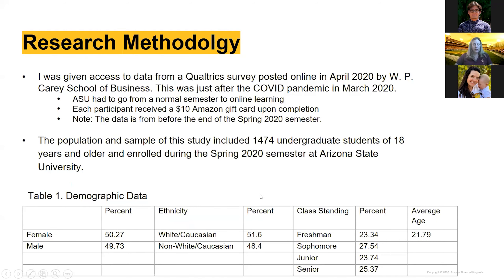For my research, I was given access to a survey taken in April 2020. It was posted online — a Qualtrics survey done by WP Carey School of Business at ASU. The pandemic hit ASU and everyone went to remote learning in March, so this survey was completed in April 2020, representing data from before the end of the spring 2020 semester. Each participant received a $10 Amazon gift card upon completion. The sample size included 1,474 undergraduate students who had to be enrolled that semester and be 18 or older.